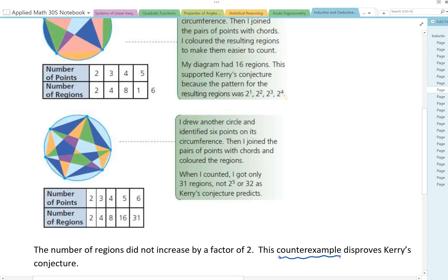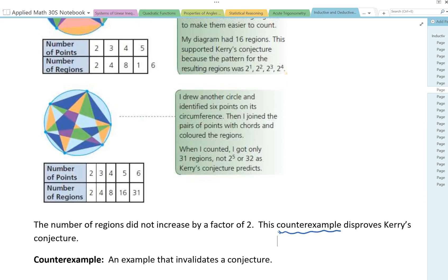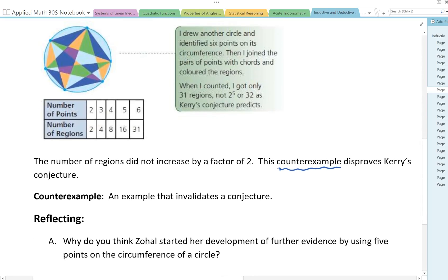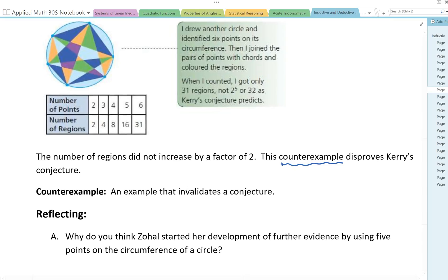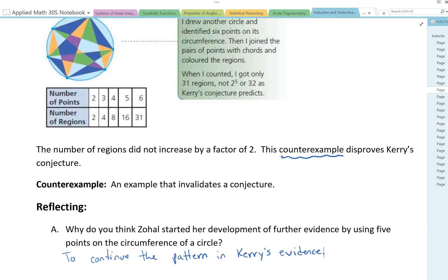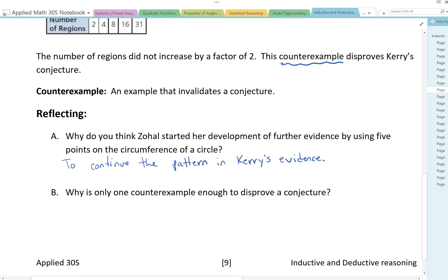This is a new term that we haven't heard yet. A counterexample is an example that invalidates a conjecture. Now, you only need to find one. As soon as you find one counterexample, then you can state that that conjecture is false. So why do you think Zohal started her development of further evidence by using 5 points on the circumference of a circle? Well, to continue the pattern in Carrie's evidence. Why is only one counterexample enough to disprove a conjecture? That's a really good question. Well, a counterexample shows a case when the conjecture is not valid. Once a counterexample is found, the conjecture is no longer valid. So you'll only need the one.